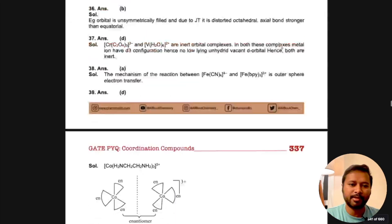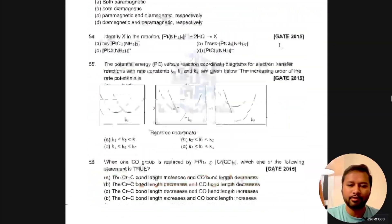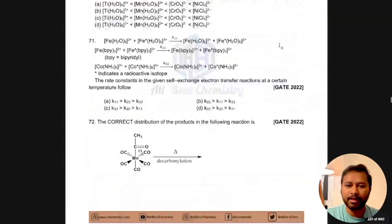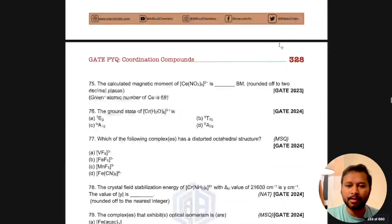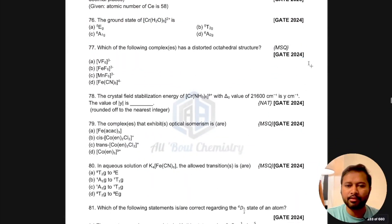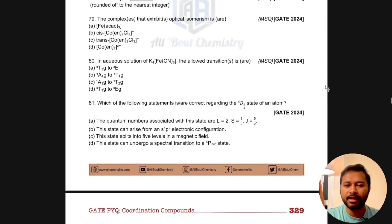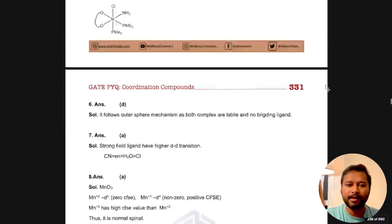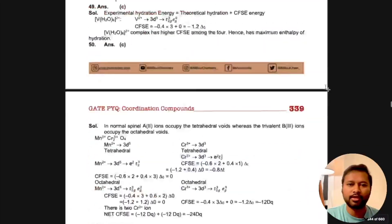Now we have the inorganic chemistry portion, which is given this orangish color. This is coordination chemistry. Again, the same manner - you have questions. We've updated it till the recent GATE exam, which is GATE 2024. If the question was MSQ it's mentioned, if it's NAT it's mentioned, then you have options followed by detailed solutions.